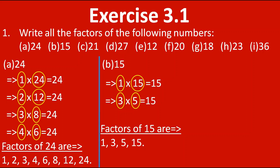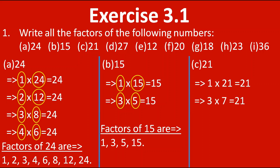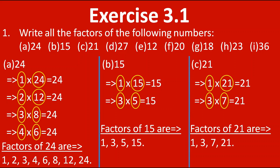Now let's move towards the third one, 21. Starting from 1: 1 into 21 gives us 21. In the table of 2 we have 2 tens are 20, so 21 won't come. In the 3's table we have 21 — that is 3 sevens are 21. In the 4th table we have 4 fives are 20, so 21 won't come. In 5's table, 5 fours are 20, so 5 also won't come. In the 6th table we don't have 21. Now it is reversing — 7 threes are 21 — so we stop. The factors of 21 are 1, 3, 7 and 21.